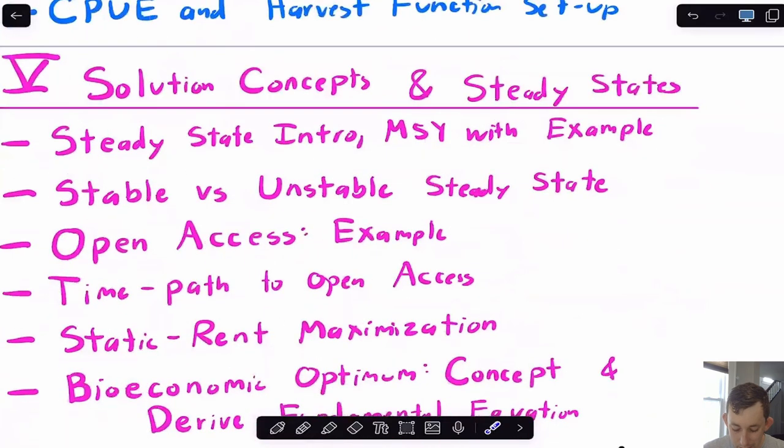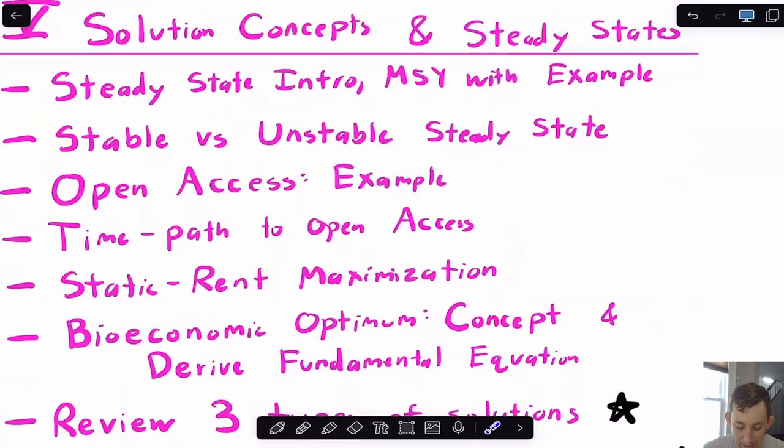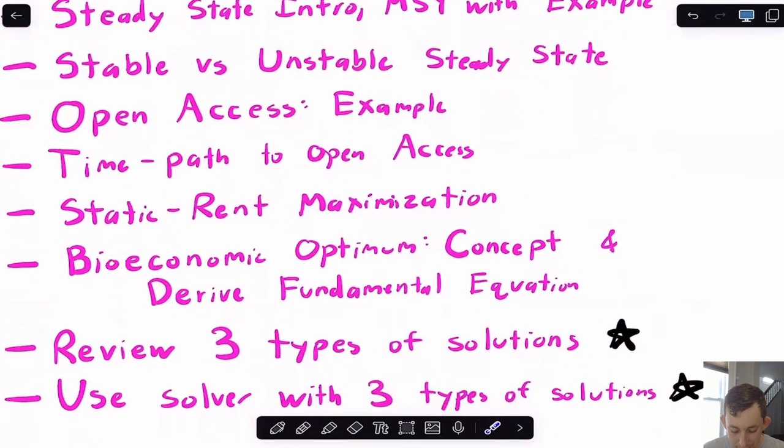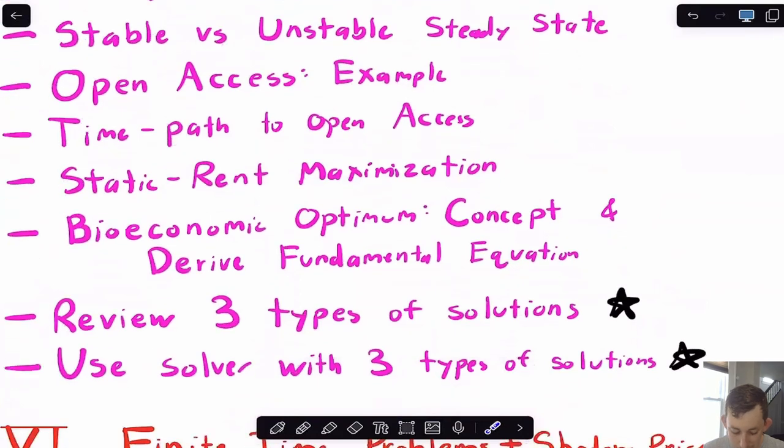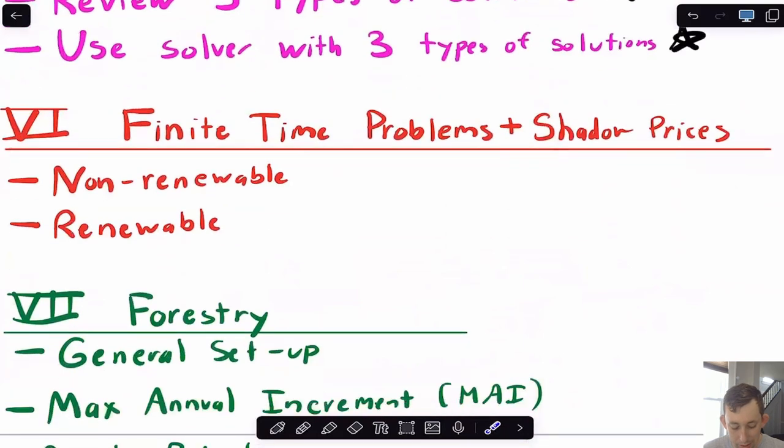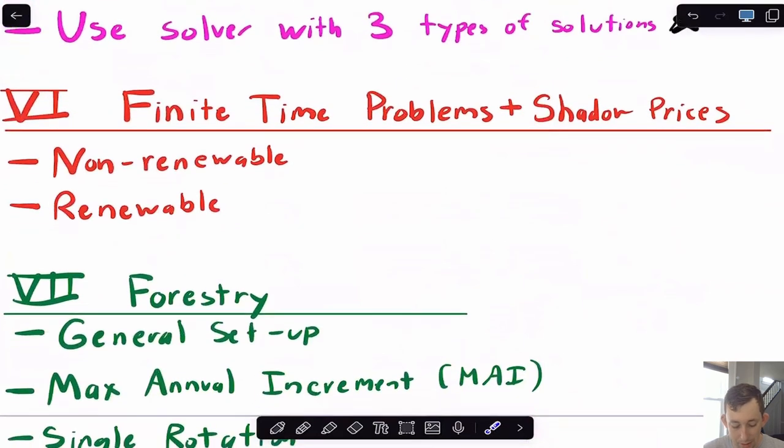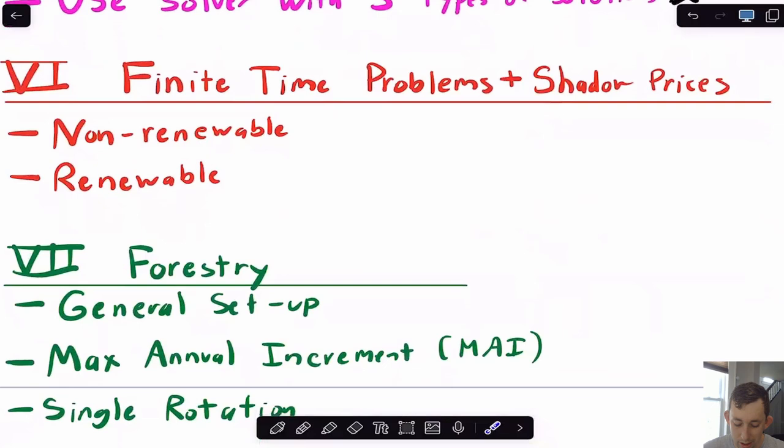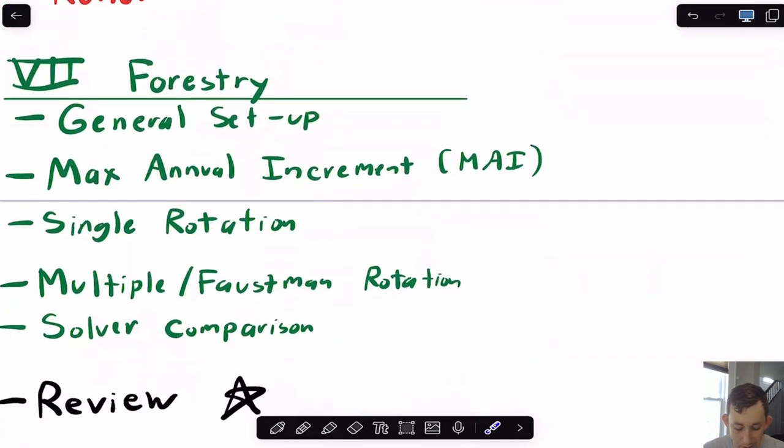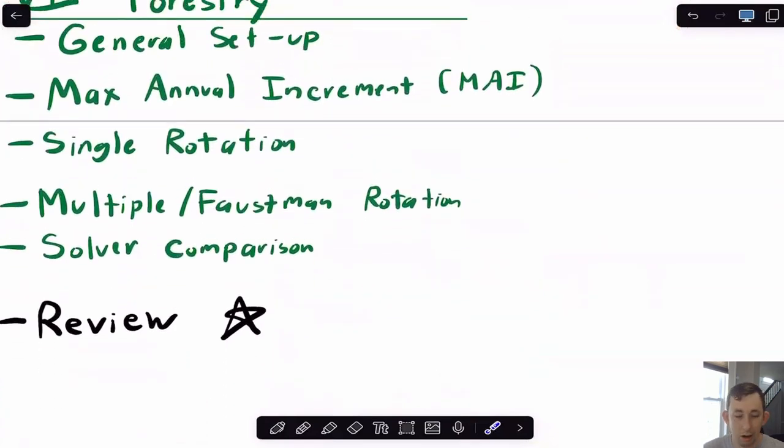Now, once we get through that, we're going to start talking about solution concepts. We're talking about steady states. We're going to talk about open access, static rent, and bioeconomic optimization. We're going to review those three types of solutions and again, use that with Solver. And then what we're going to do is we're going to go back and do both non-renewable and renewable resources. We're going to do that on a finite time horizon instead of an infinite time horizon. And we're going to talk about what shadow prices do to our solution. And then we're just going to wrap up talking about forestry, a couple of different concepts related to forestry, and then we will review.